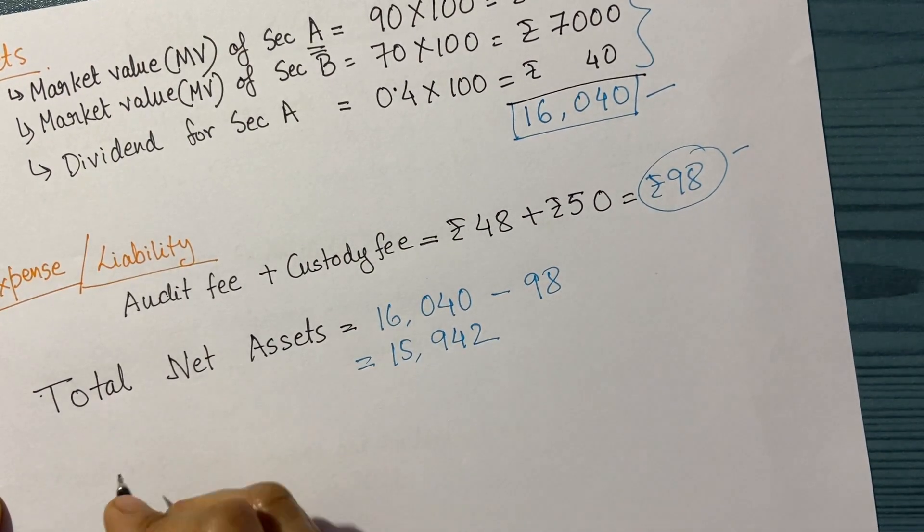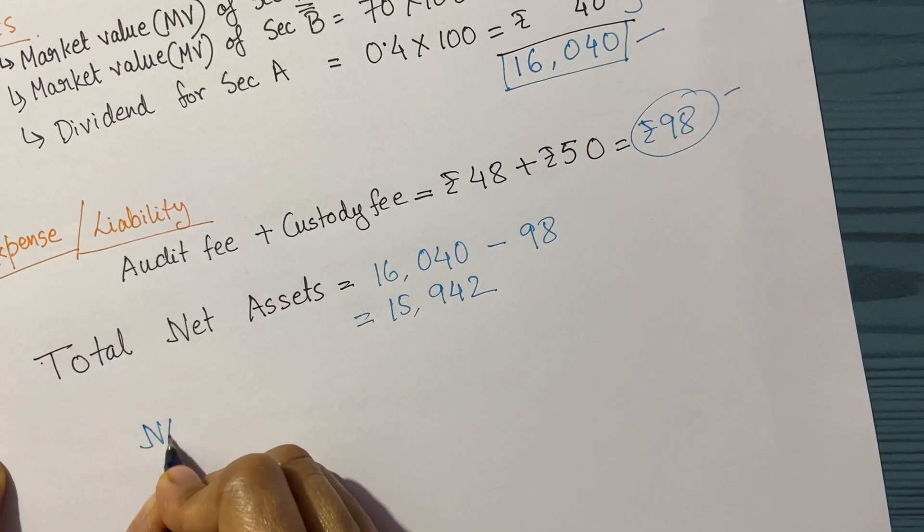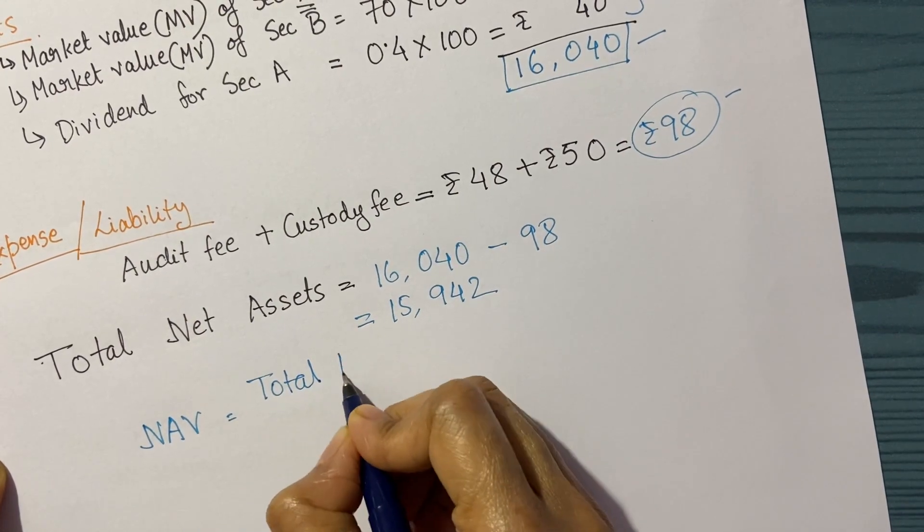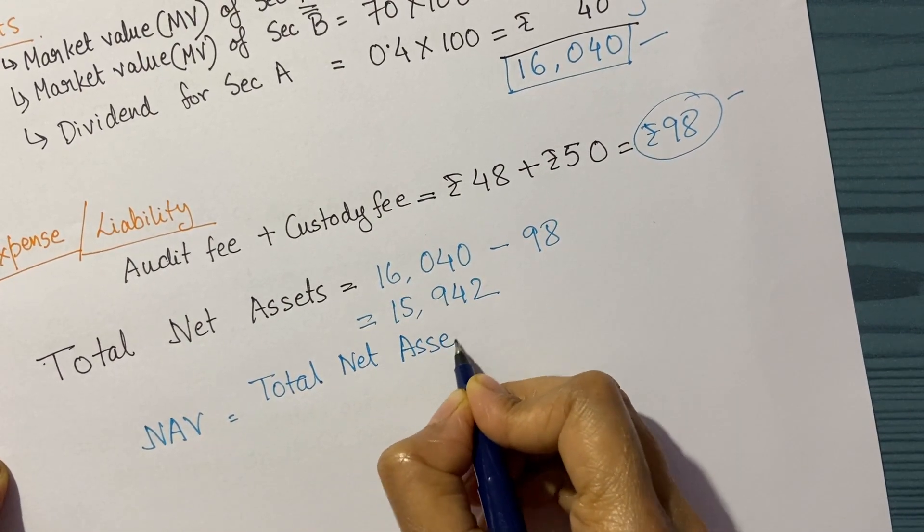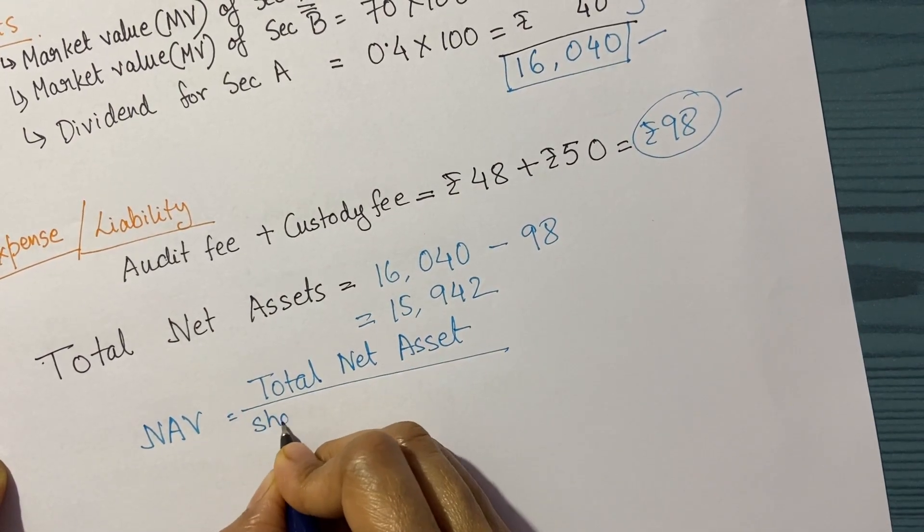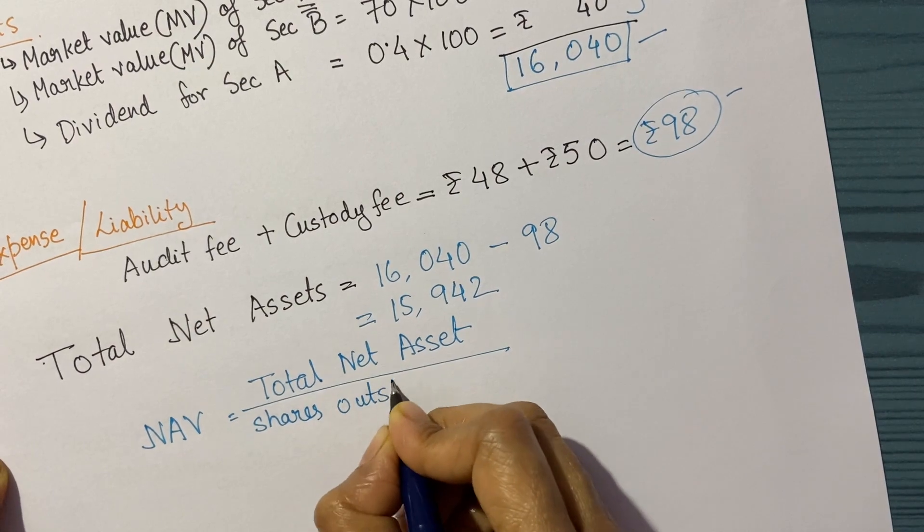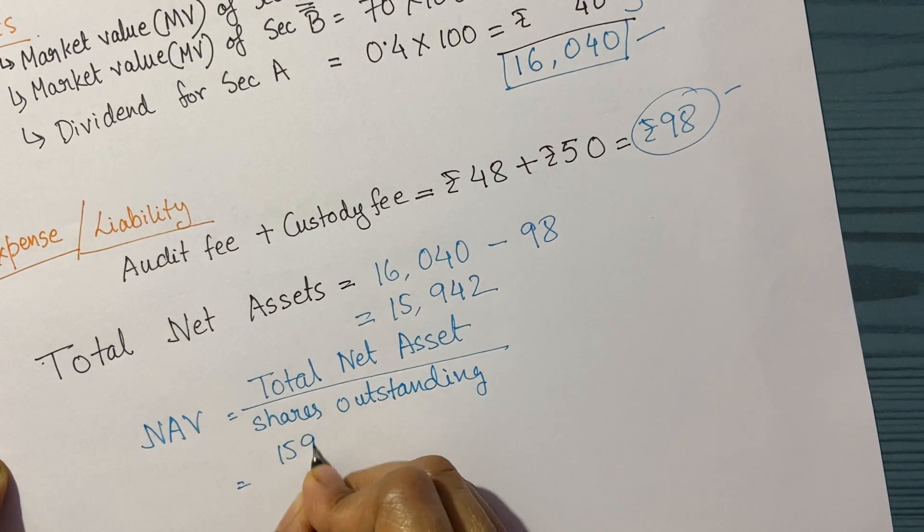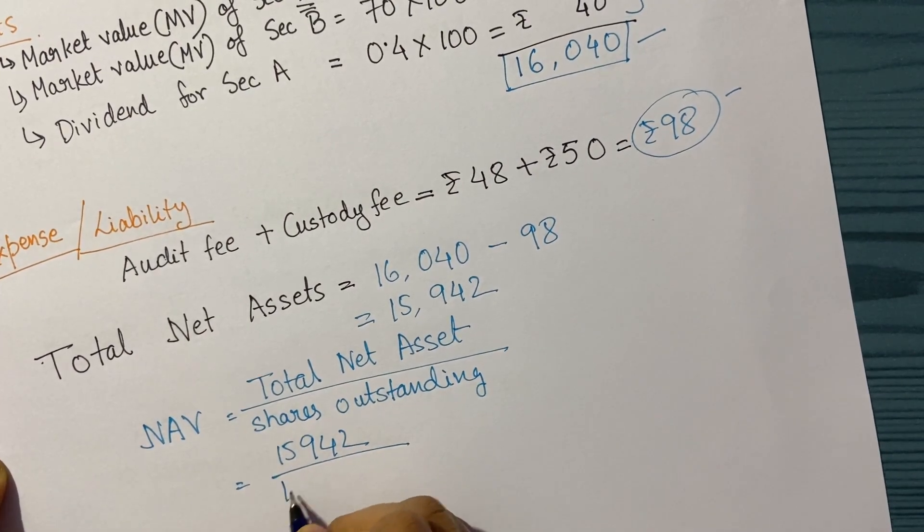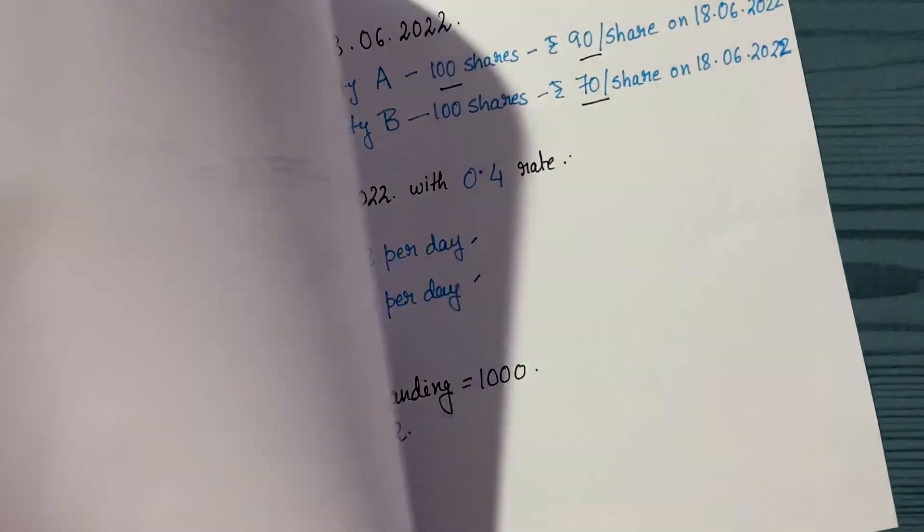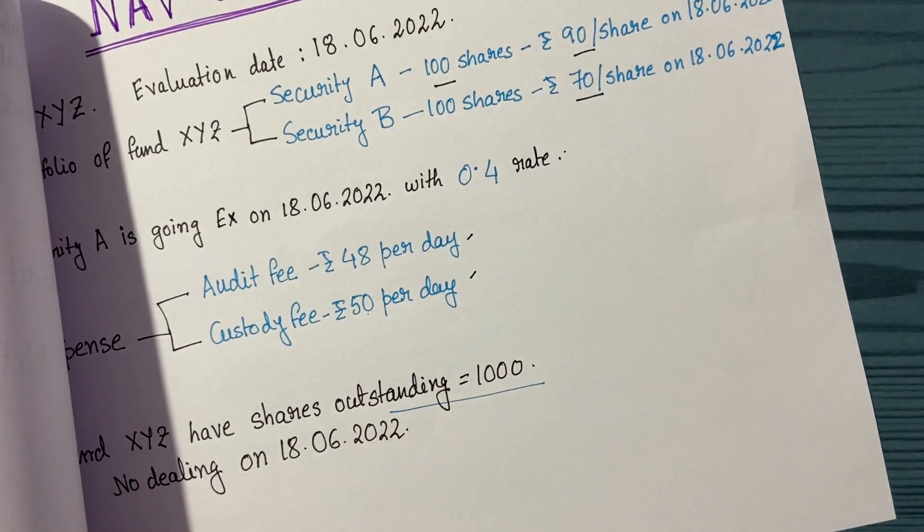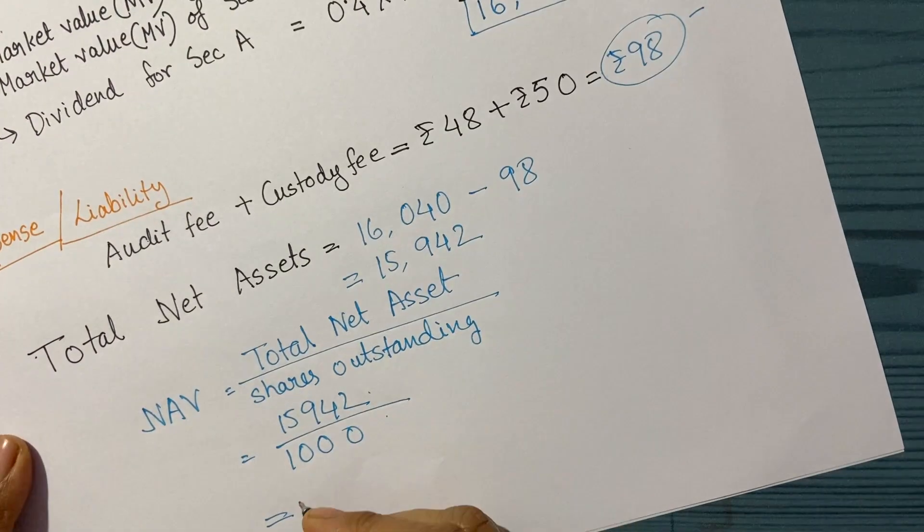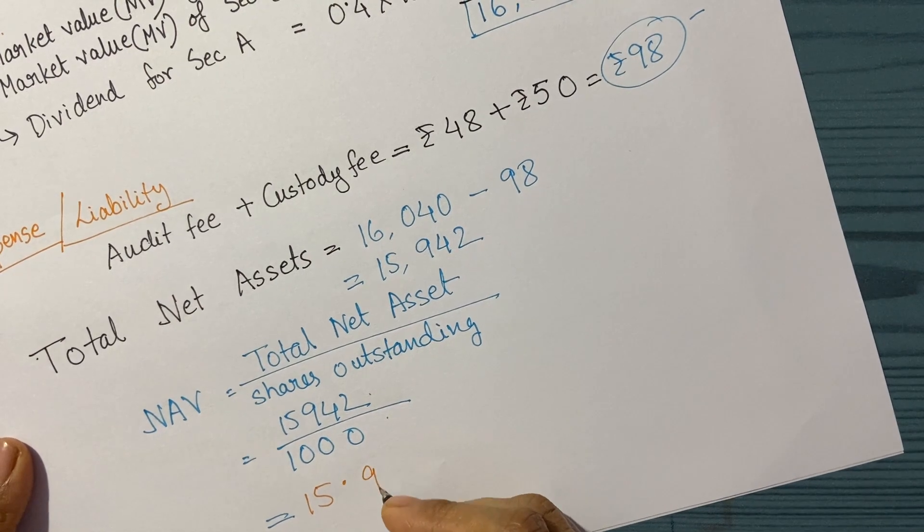As we know, the formula for NAV is total net asset divided by shares outstanding. That's 15,942 divided by 1,000. As I mentioned, shares outstanding is 1,000, so my NAV is 15.942 rupees.